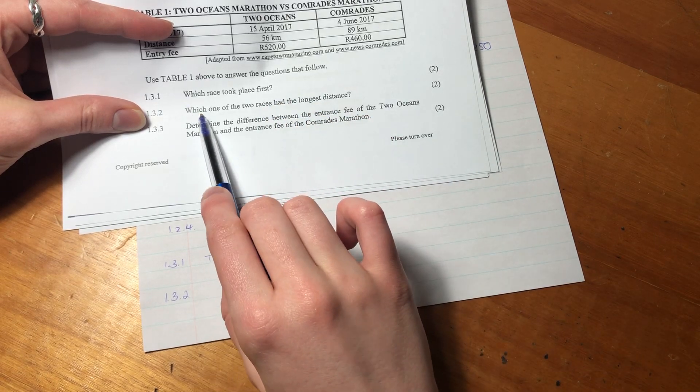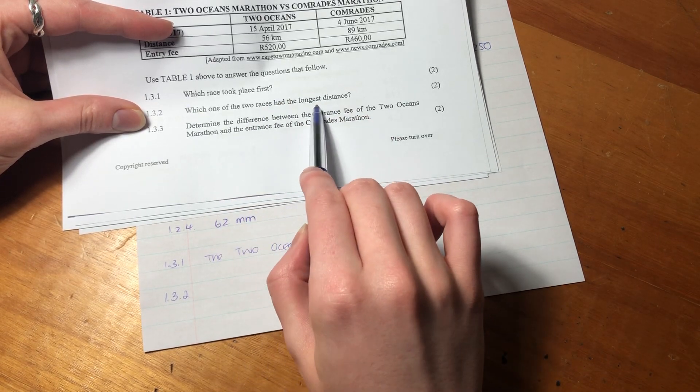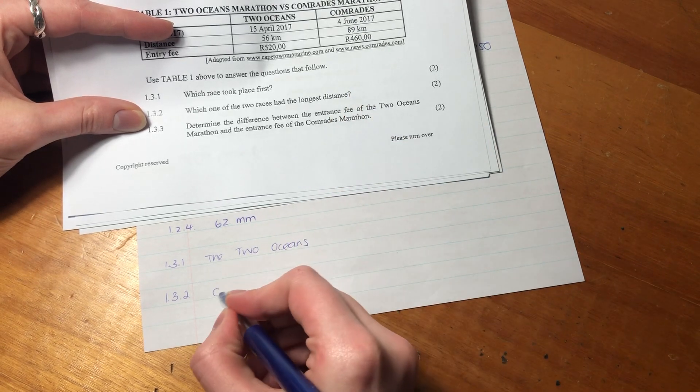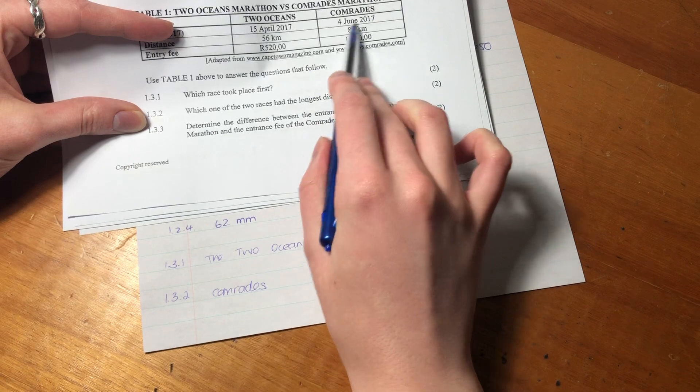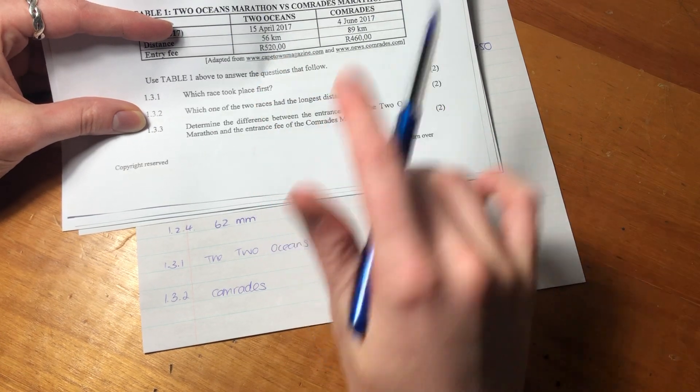So then it says, which one of the two races had the longer distance? We know it is the comrades. We saw that when we went over this initially. The comrades is 89 compared to 56.